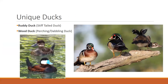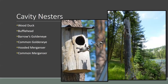Other unique ducks include the ruddy duck and wood duck. Wood ducks are considered dabbling ducks but are unique as they can perch in trees and are cavity nesters. The ruddy duck is a small stiff-tailed duck with a large beak and short stout neck. Cavity nesting species include the wood duck, bufflehead, Barrow's and common goldeneyes, and the common and hooded merganser. These birds use natural cavities in trees as well as constructed nesting boxes. A beautiful snag with a nesting cavity used by goldeneyes is shown on the right.